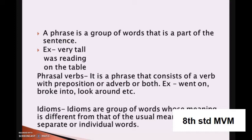Now what is called as idioms? Idioms are a group of words whose meaning is different from that of the usual meanings of their separate or individual words. So directly what is seen in the words is different from its actual meaning. For example, fish out of water means in a bad situation. Or the early bird catches the worm — it doesn't mean a bird will catch a worm, but if you do something in a timely manner, you will definitely succeed. These are idioms.